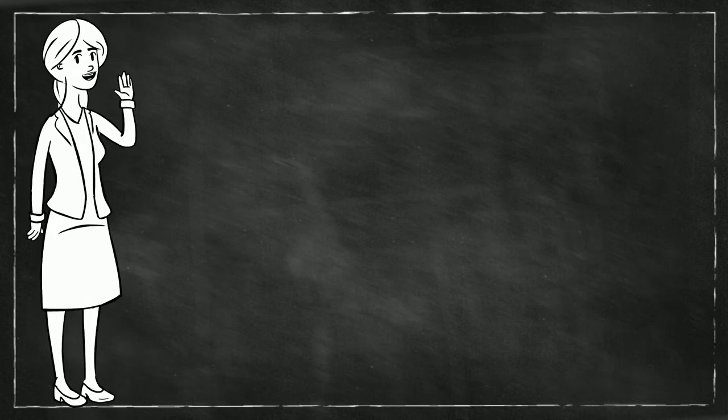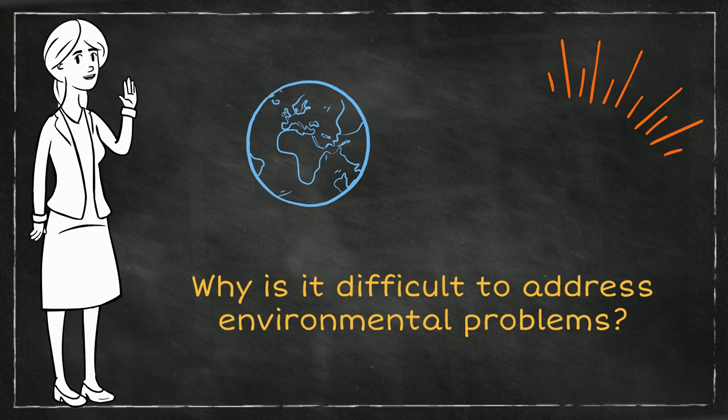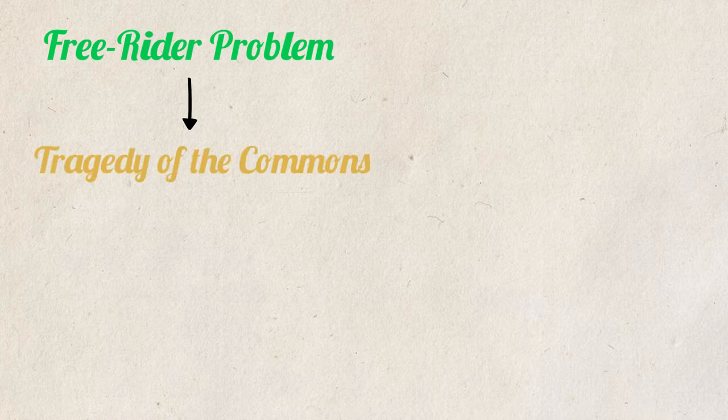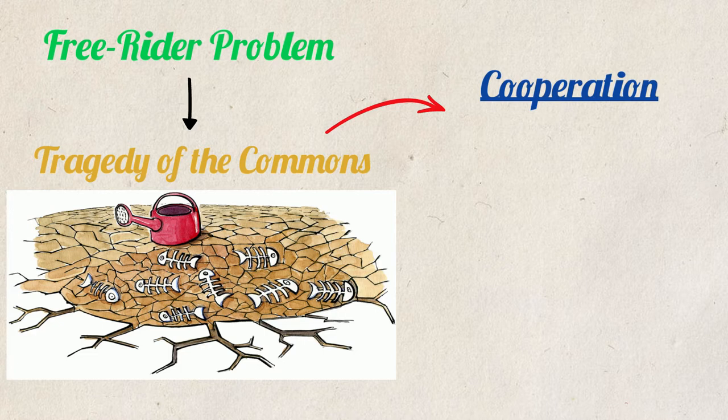Hello friends, welcome to the second part of the series where we talk about why it is so difficult to address environmental problems. In the previous video, we learned about the free rider problem and saw that all environmental resources are prone to the tragedy of the commons, but it is possible to try a mix of strategies that allow people to cooperate in preserving our environment.